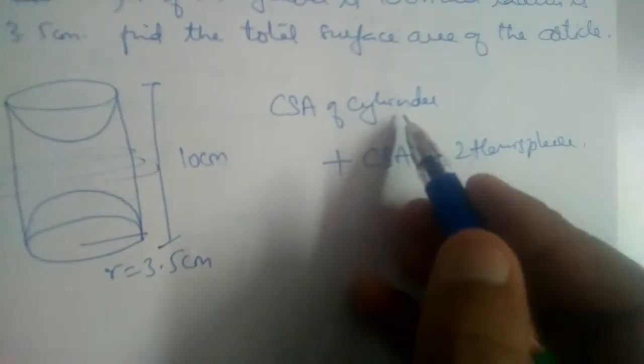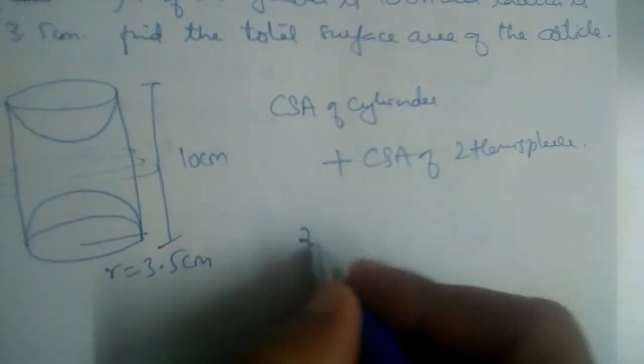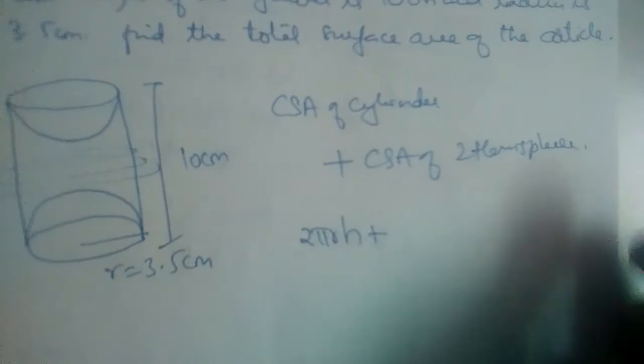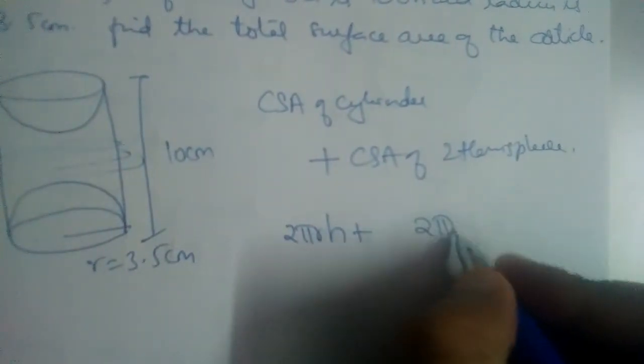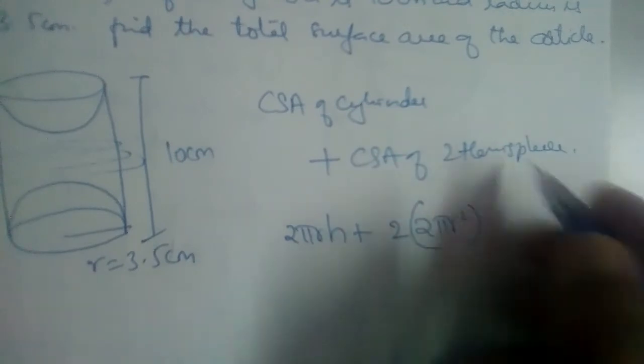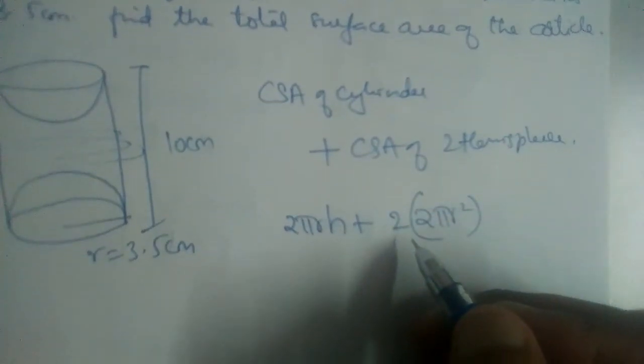So curved surface area of cylinder, we know it is equal to 2πrh, plus curved surface area of one hemisphere is equal to 2πr². So for 2 hemispheres, it is 2 × 2πr².